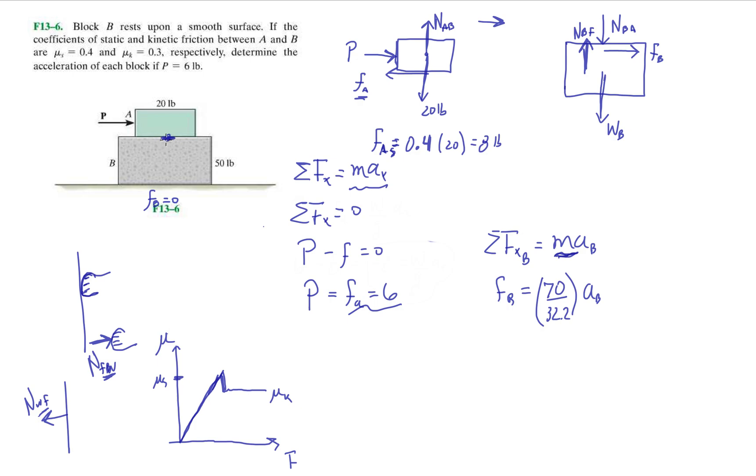So now let's see. We have 6 equals 70, whatever this is. Slugs, which I've never really gotten used to. You barely use slugs throughout your whole undergraduate career, or even in graduate school as well. You don't comprehend whatever that is. Anyway, so this is the acceleration of B. So this is telling us that when we do this calculation, we get an acceleration of 2.76 feet per second squared.